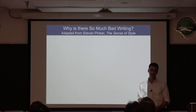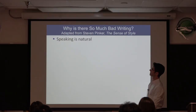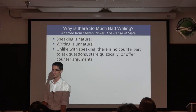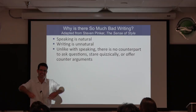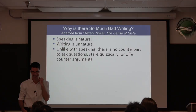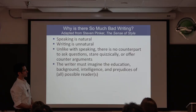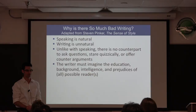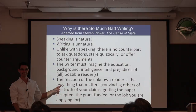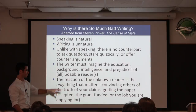So why is scientific writing so bad? Writing is unnatural, but speaking is natural. In speaking I can tell based on your expression whether you're on my wavelength, but in writing you just hope you set it in a way people will understand. As a result, you have to err on the side of treating your readers a little bit like a baby. The writer must imagine the education background, intelligence, and prejudices of all possible readers — a really hard task. The reaction of the unknown reader is the only thing that matters. If your writing doesn't persuade your reader, it's useless.